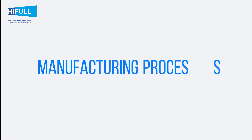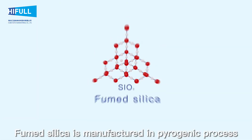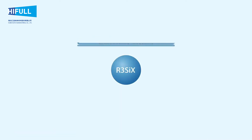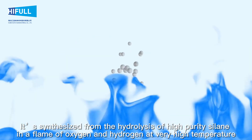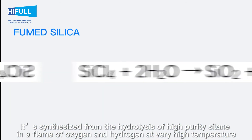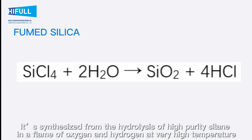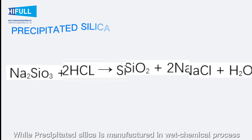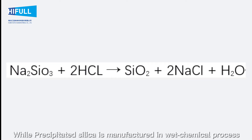First, manufacturing process. Fumed silica is manufactured in a pyrogenic process. It is synthesized from the hydrolysis of chlorosilane in a flame of oxygen and hydrogen at very high temperature, while precipitated silica is manufactured in a wet chemical process.